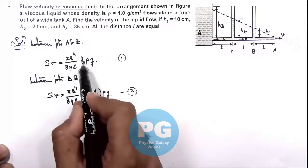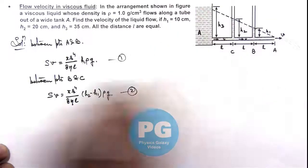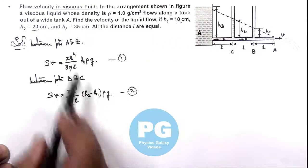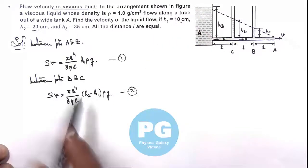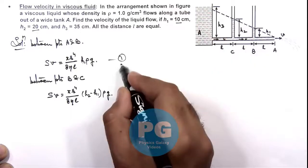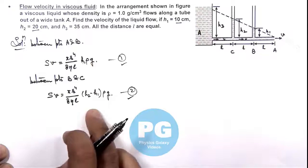And here you can see as h1 is 10, and the value of h2 minus h1 is also 10, so this is in accordance with the fluid flow which is homogeneous. So both of these equations are coming out to be correct for Sv.